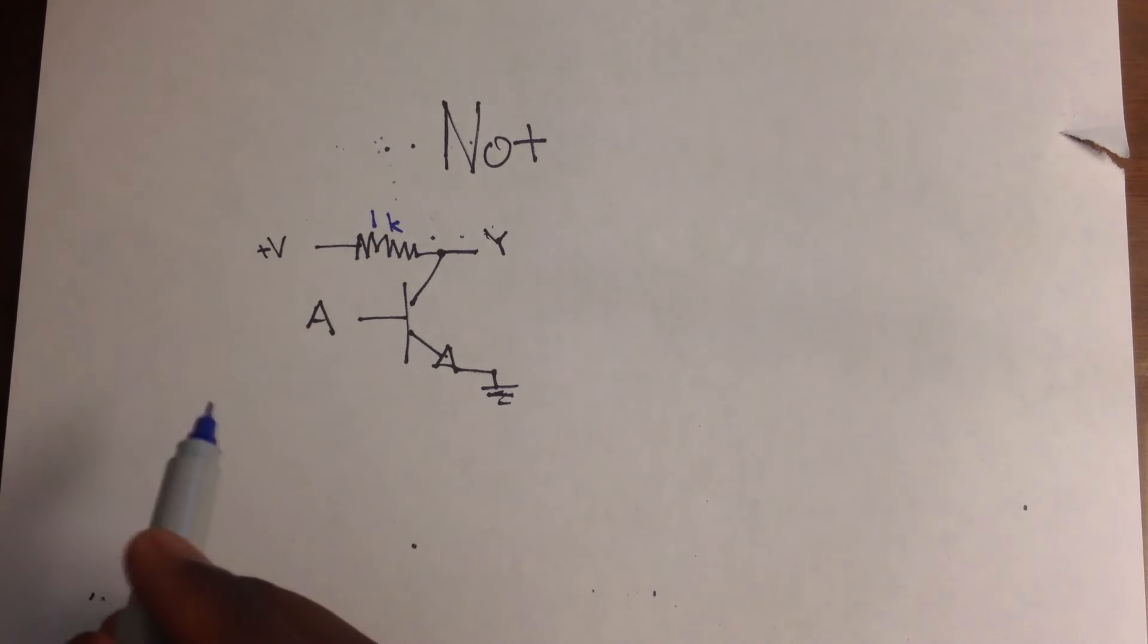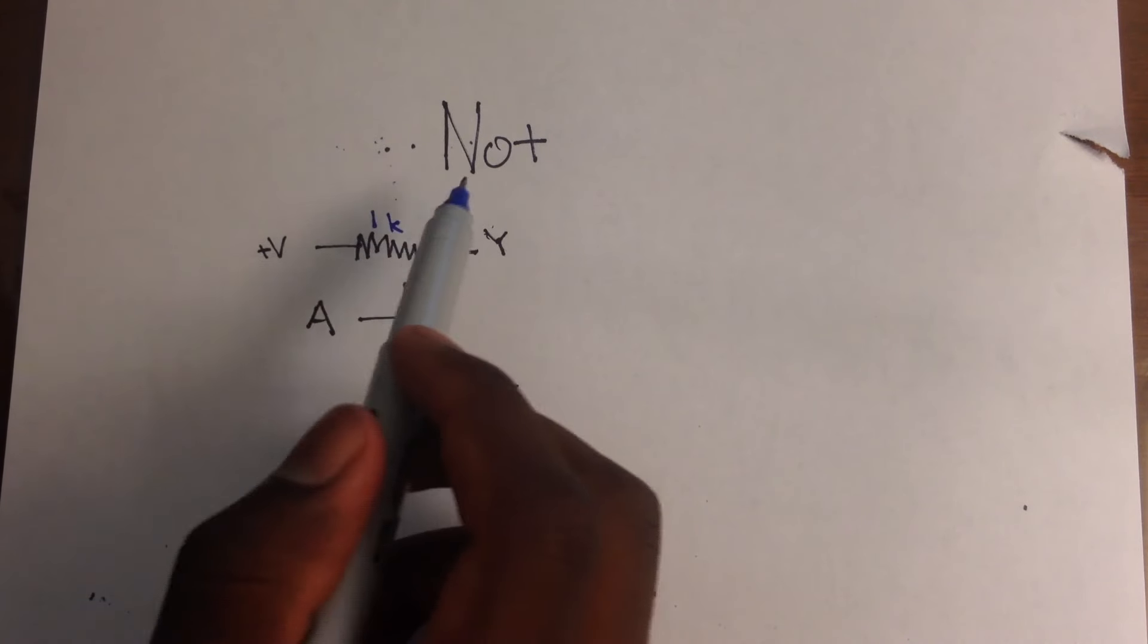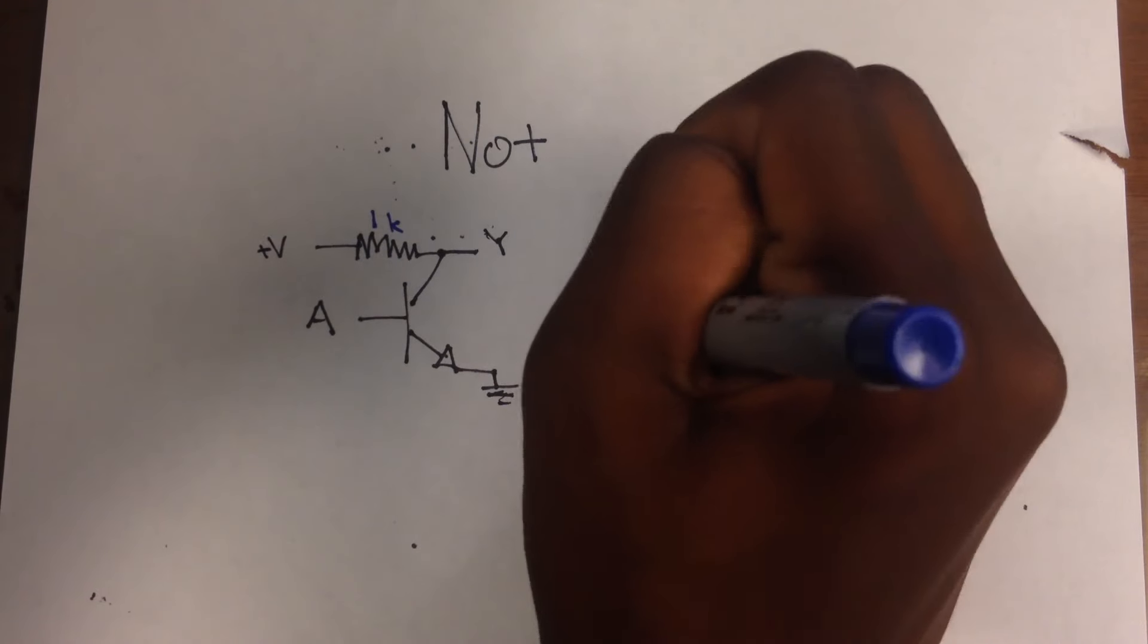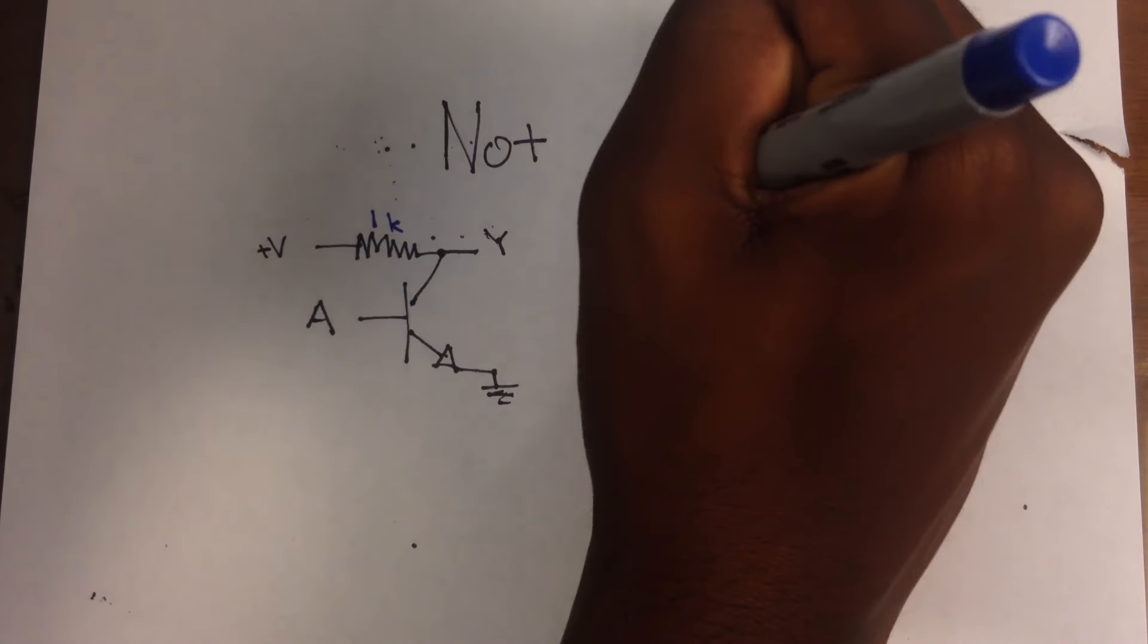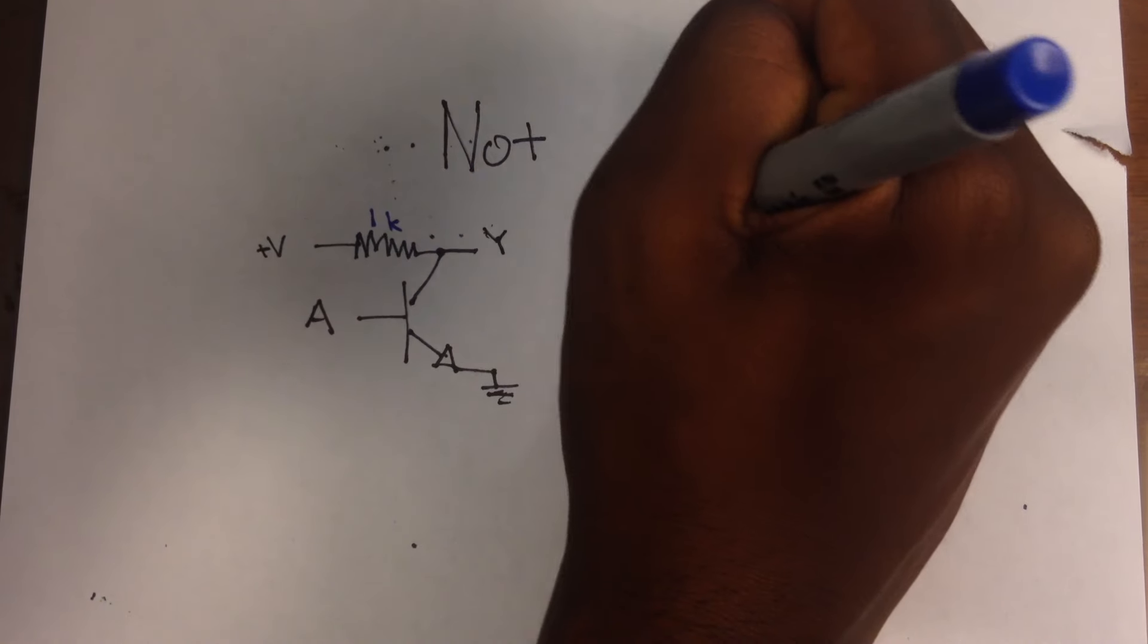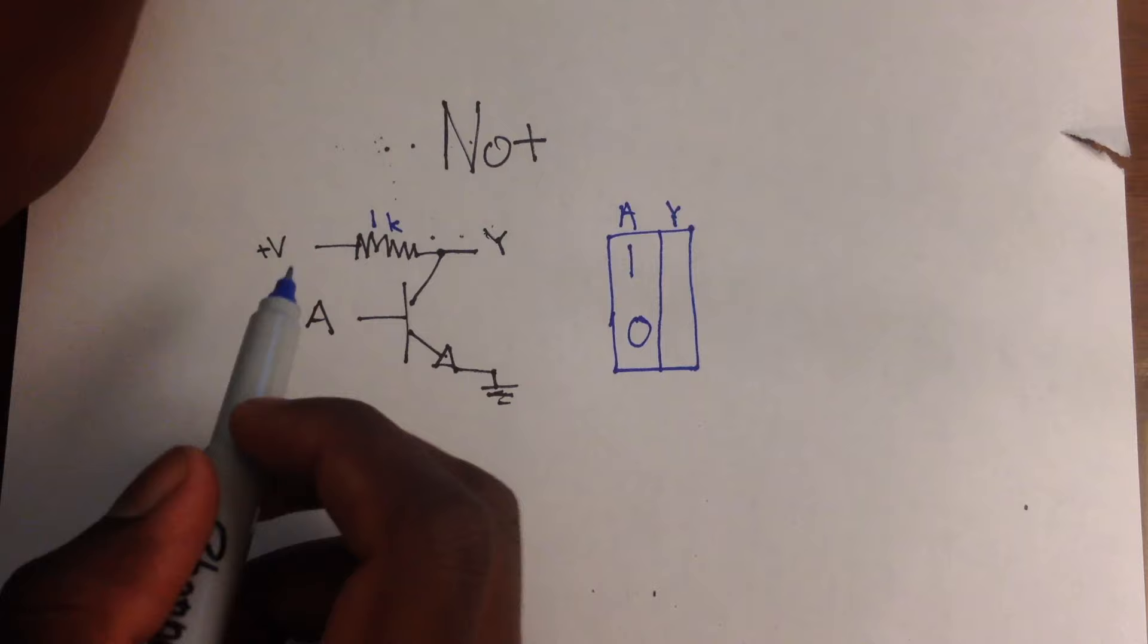Now, this is the last one we're going to learn today. This is called the NOT gate. So let's do a truth table for this one. Now, there's only one input, so that means there's only one option. A is either 1 or 0. So let's take a look. This one is a little bit trickier to understand.